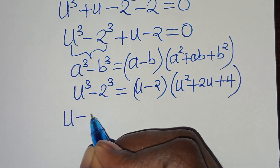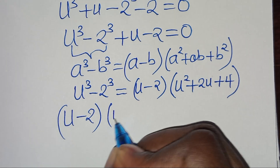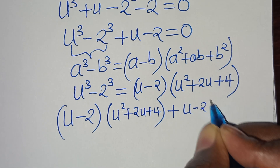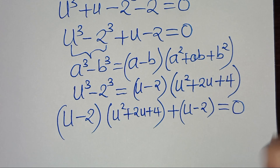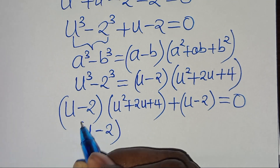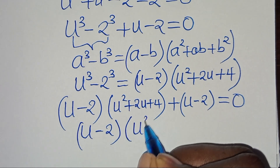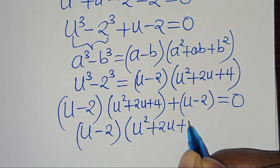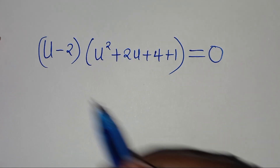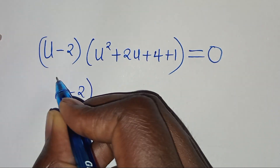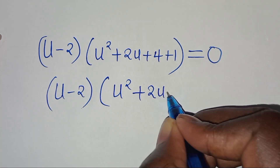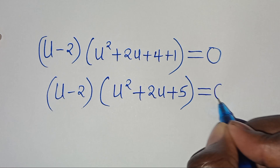Therefore we have u to the power of 3 subtract 2 to the power of 3, expressed as u minus 2 into the parentheses: u to the power of 2 plus 2u plus 4. Then plus u minus 2, this is equal to 0. We have that u minus 2 is common here, so we can factor out u minus 2: parentheses u squared plus 2u plus 4 plus 1, this is equal to 0.